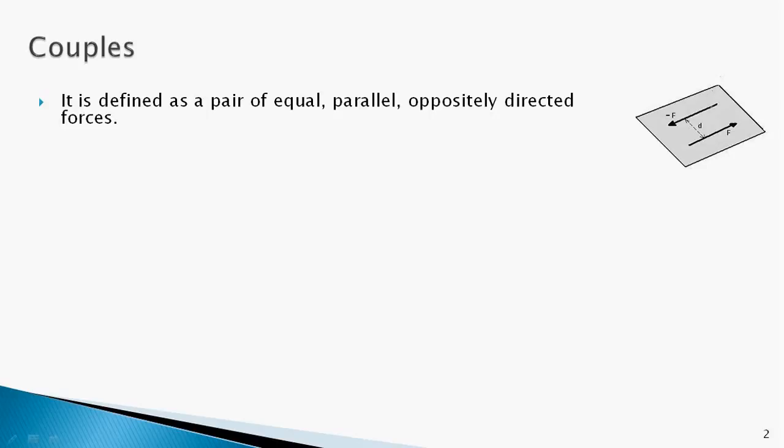Welcome back. I'll be discussing couples in this video. First, let's define a couple. A couple consists of a pair of equal, parallel, oppositely directed forces with a definite distance between the lines of action of the two forces. As you see in this diagram, the planar body is acted upon by two forces each of magnitude F, with opposite directions and a distance D between their lines of action.